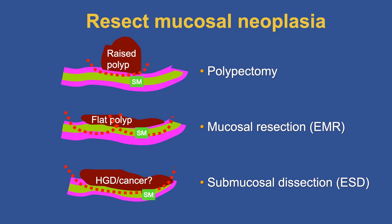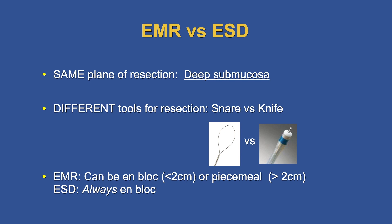They differ in their indication and in the depth of resection. For polypectomy, we're dealing with a raised polyp, and our depth of resection is in the deep mucosa — maybe the superficial submucosa, but not deeper. EMR is performed for flat polyps, and the depth of resection is in the deep submucosa. ESD also resects to the deep submucosa, but the difference is our suspicion that there may be high-grade dysplasia or cancer involving the lesion — if you suspect HGD or cancer, ESD is the way to go.